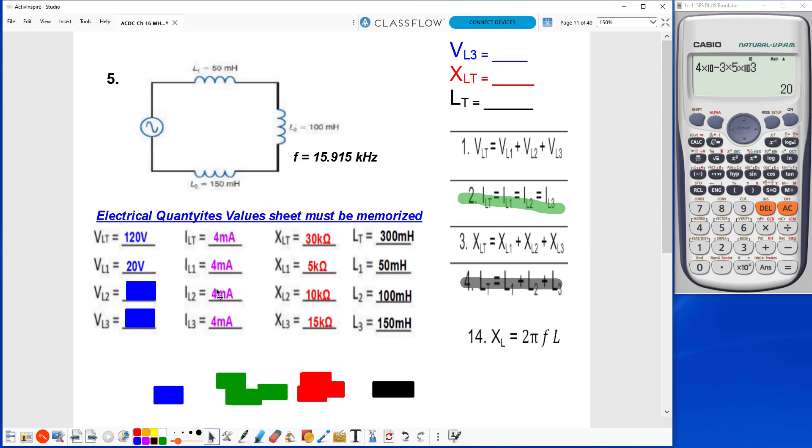4 milliamps times 10k ohms gives me 40 volts, and 4 milliamps times 15k ohms gives me 60 volts.